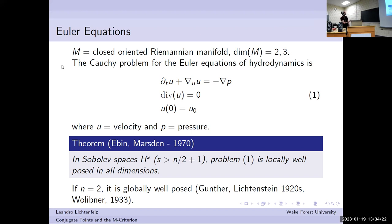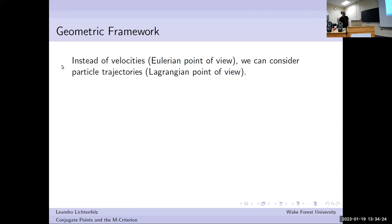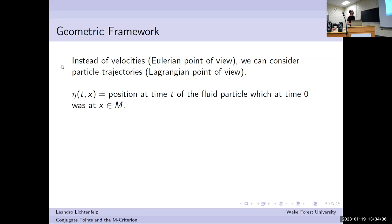I want to do geometry, so I'd like to switch. Instead of thinking of velocities, I want to think also of particle trajectories. I'm going to switch to this Lagrangian formalism and quickly remind you how that goes. We define this new variable eta of t and x, which you can think of as the position at time t of the fluid particle that at the initial time zero was at x.